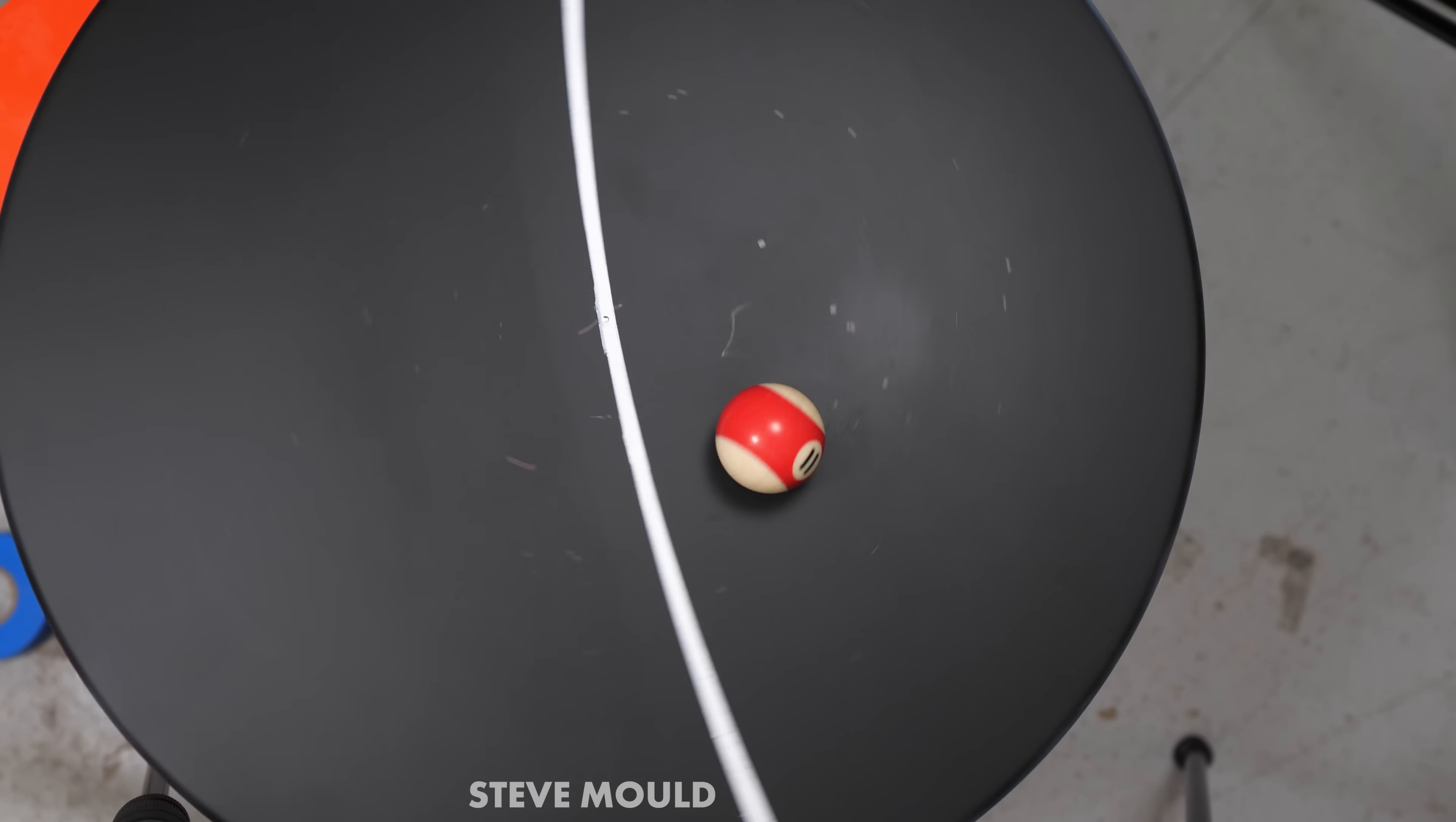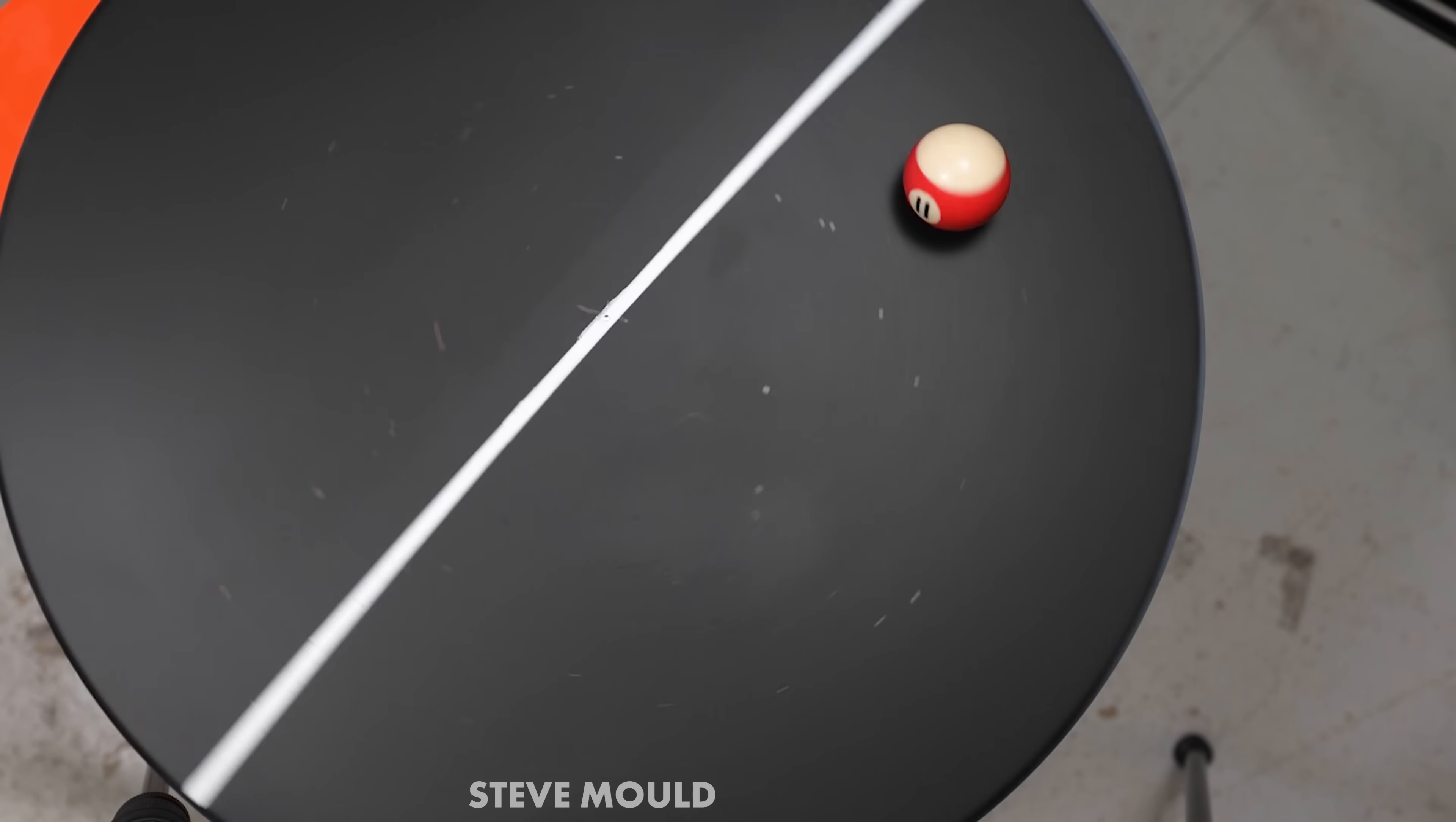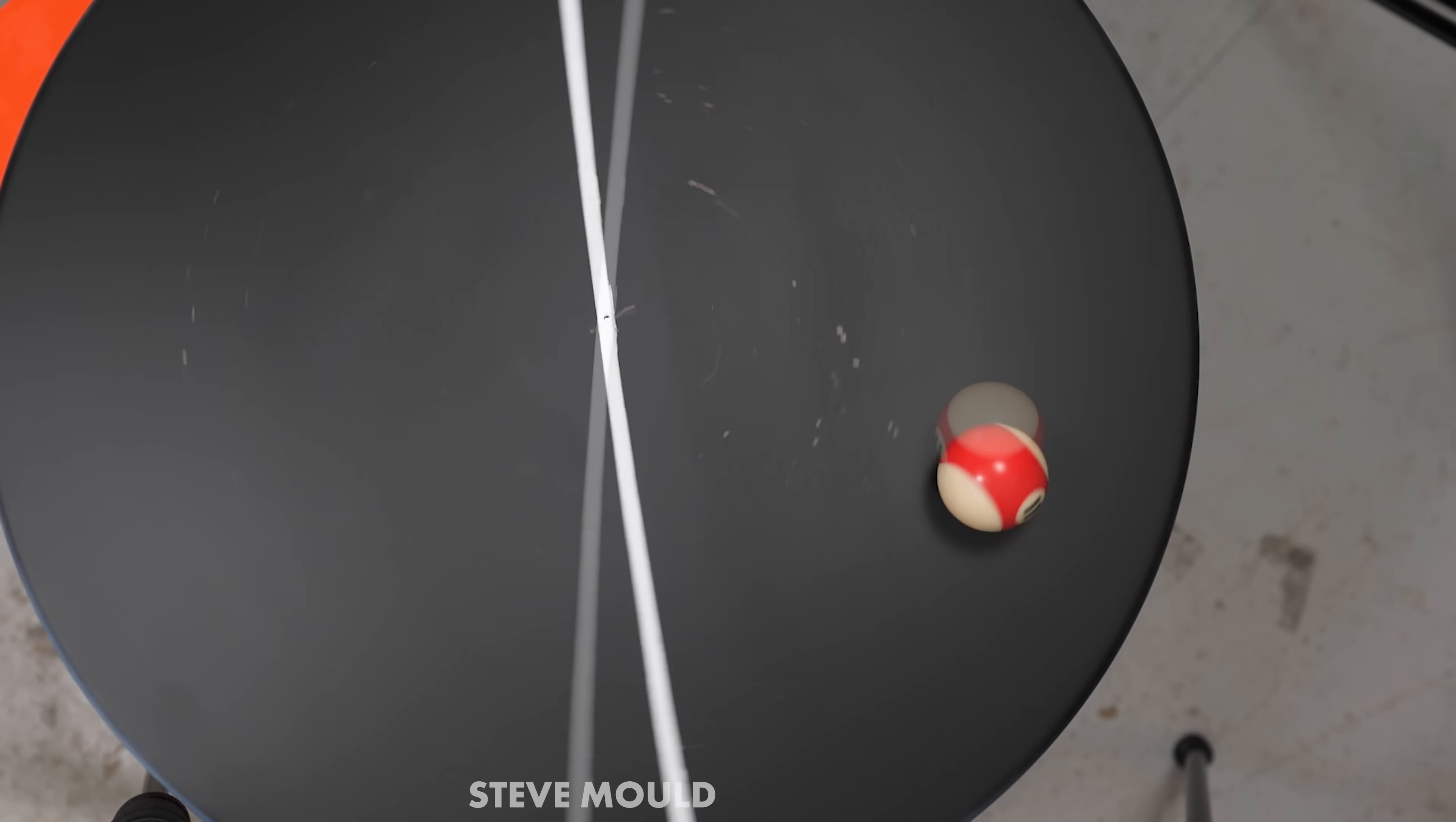And here's something really crazy. Let's compare how long it takes for the turntable to turn versus the ball to go around one of those circular orbits. I'll count the turntable turns out loud. You keep an eye on the ball orbits. One, two, three, four, five, six, seven.